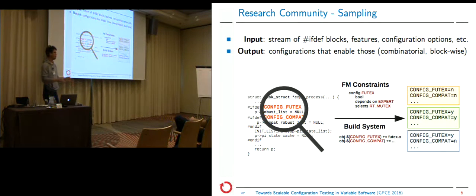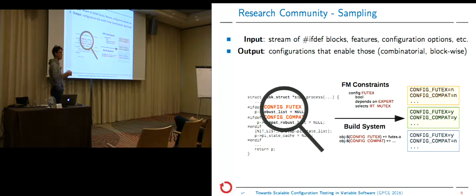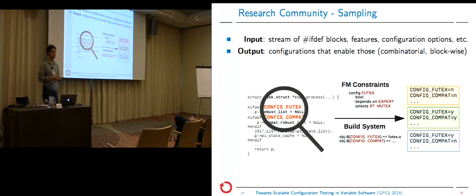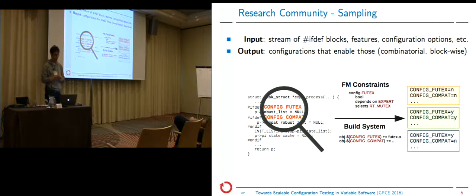The research community — as we've heard about today — came up with sampling. Sampling in this context means we have some variability tokens as input: this can be an ifdef block, a stream of ifdef blocks, or configuration options and features. It generates configurations that systematically disable or enable those configurations. This can be combinatorial — for instance pairwise sampling, as Mustafa presented — or blockwise. The important message is there are algorithms and tools that can generate configurations.